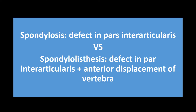Piriformis syndrome is essentially sciatica from irritation or compression of the sciatic nerve by the piriformis muscle, due to repetitive microtrauma or prolonged sitting. The straight leg test has good sensitivity but poor specificity; it's positive only if the patient has radicular pain radiating past the knee. The crossed straight leg test — raising the unaffected leg elicits radicular pain — is almost pathognomonic with very high specificity. Pain at 30–70 degrees suggests a herniated disc; pain at less than 30 degrees suggests abscess, tumor, or spondylolisthesis.